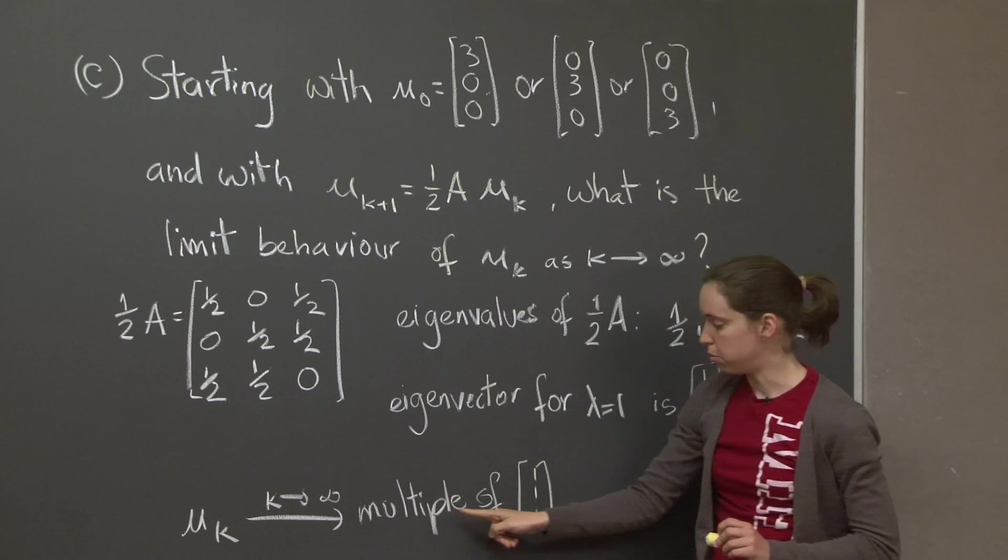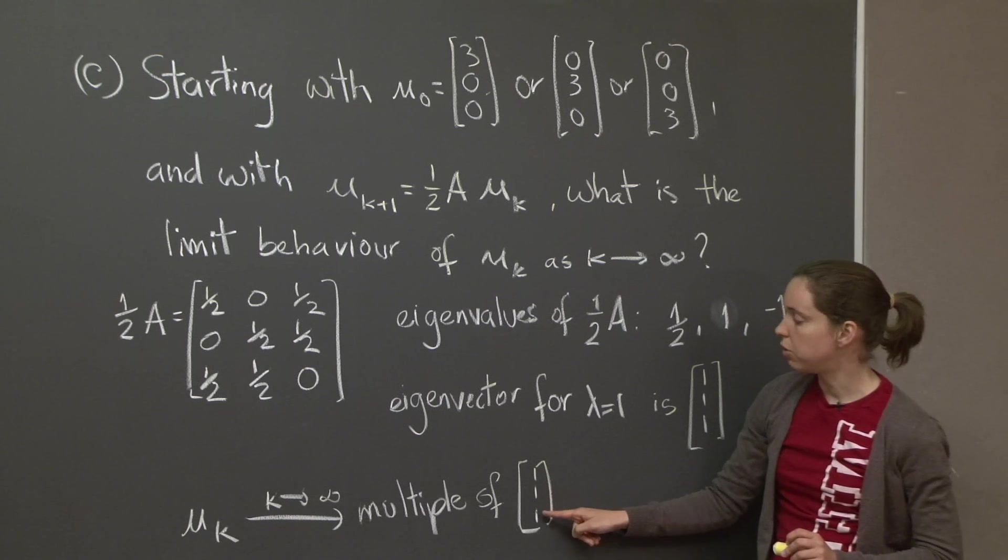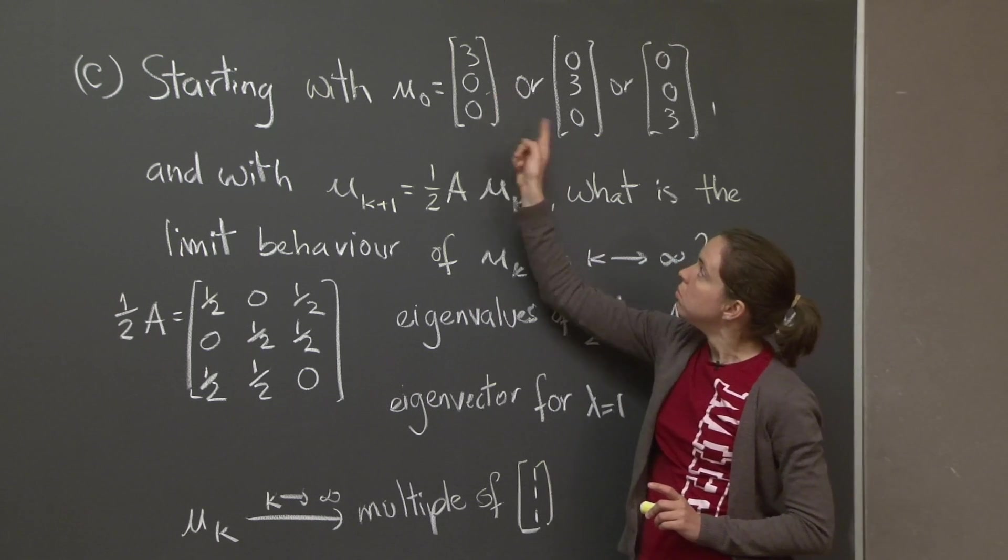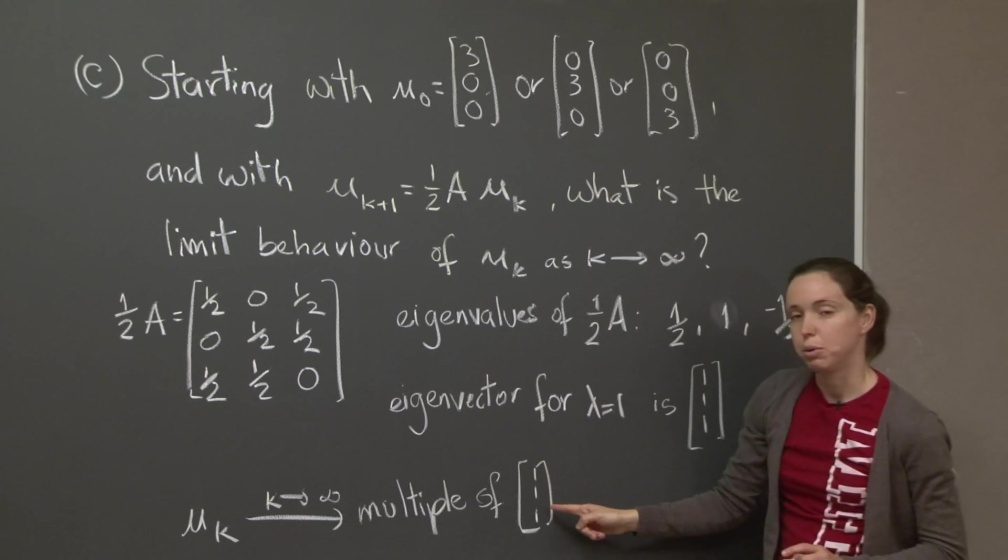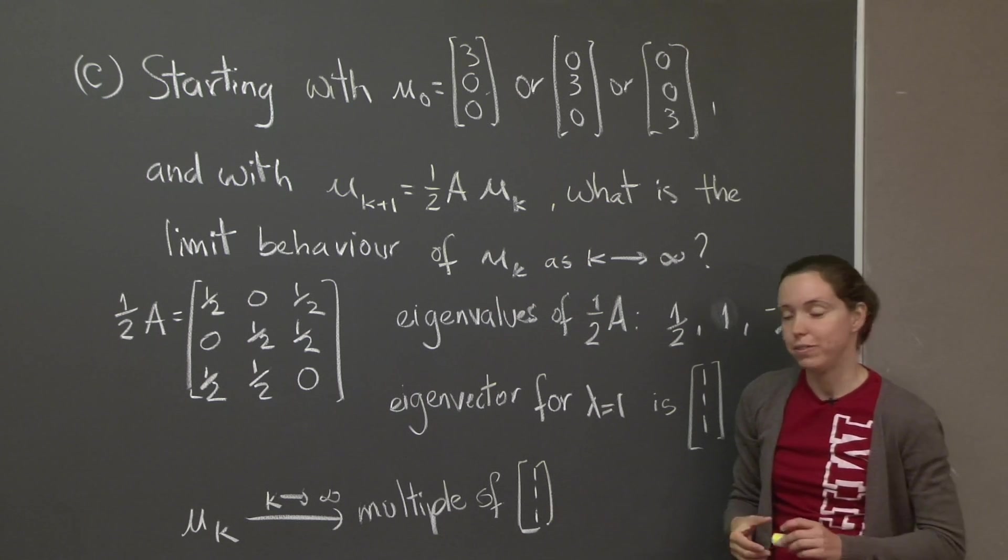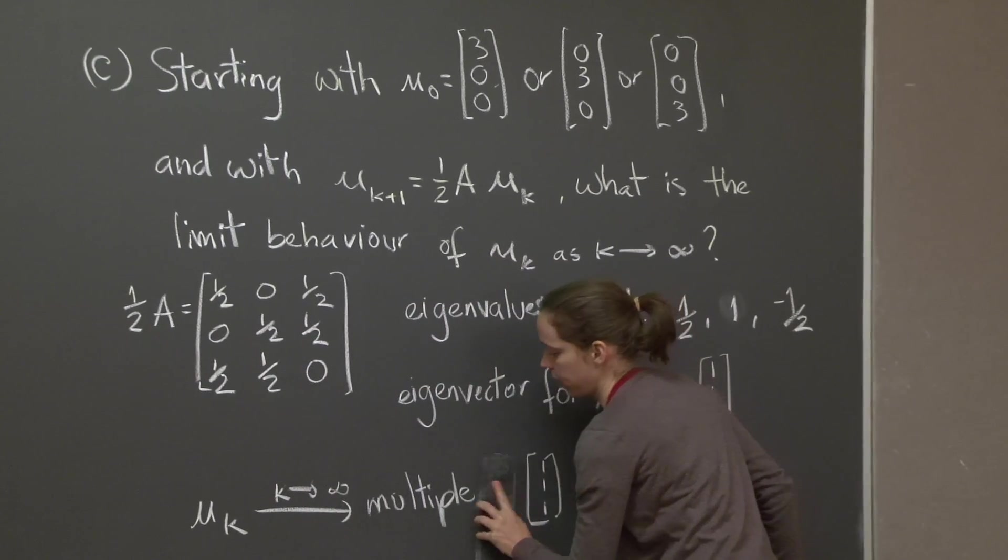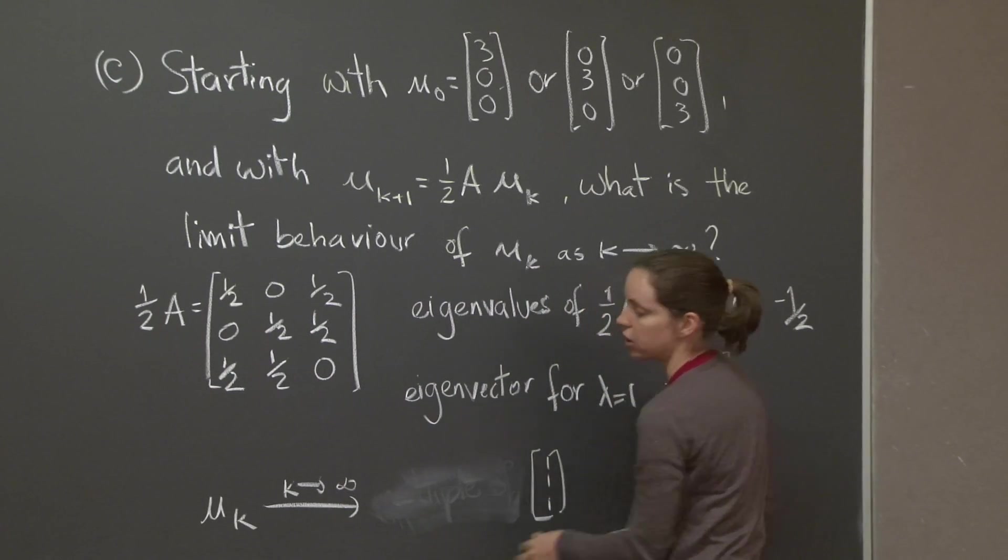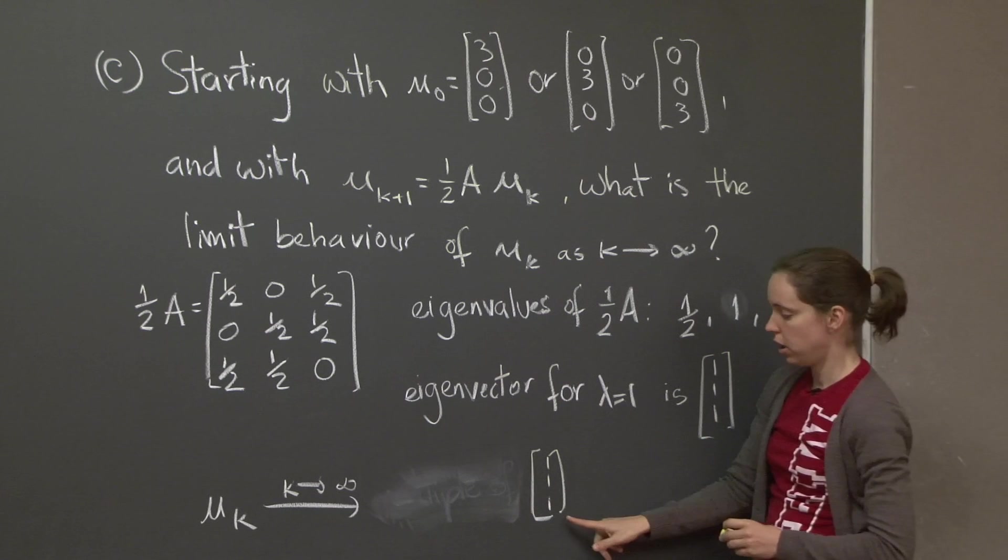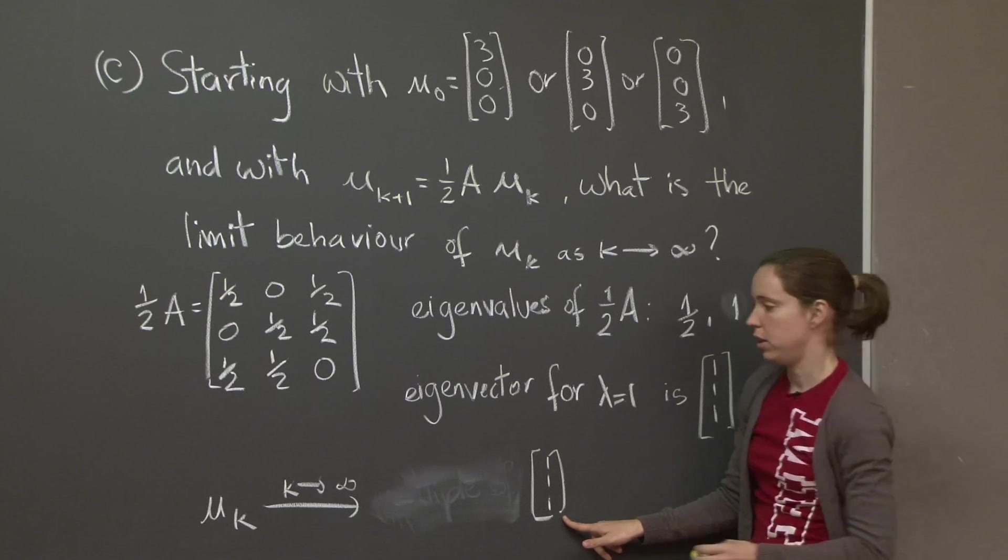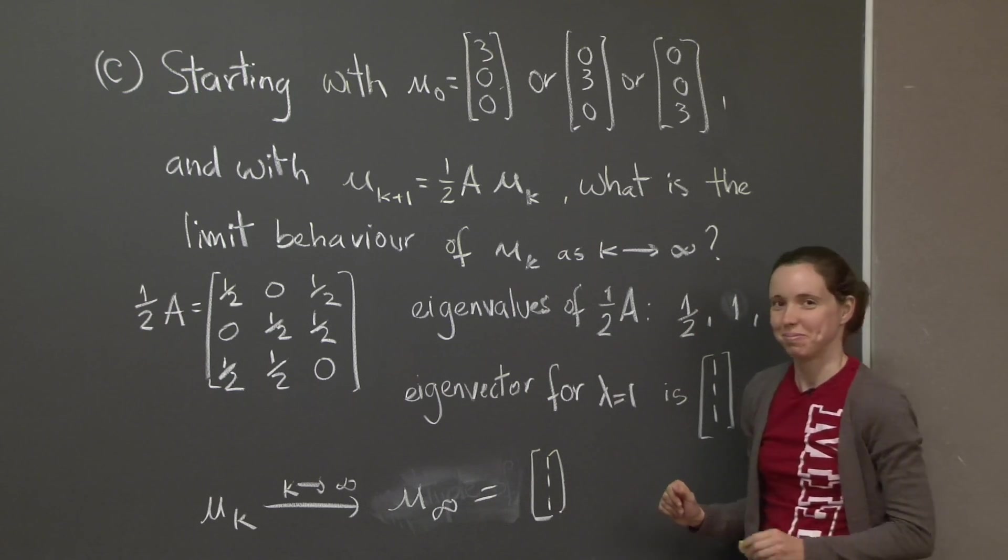So whatever the multiple of u 1, 1, 1 is, it has to have the sum of these entries add up to 3. Well, that's already there. We happened to pick the correct eigenvector, so that's very convenient. The correct multiple is simply the vector 1, 1, 1. So the limit behavior of u k as k goes to infinity is u infinity equal to 1, 1, 1. So we're done. Thank you.